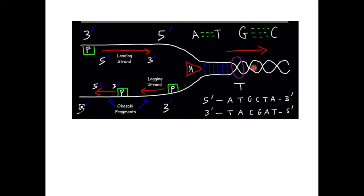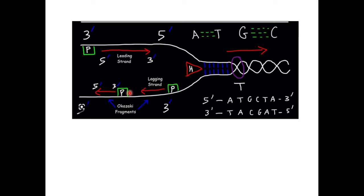Replication begins at the replication fork. Helicase enzyme cuts and separates the strands. Then the primer provides a free hydroxyl group, synthesis begins, DNA polymerase synthesizes the new strand, primers are removed by enzymes, and ligase fills the gaps. One strand is synthesized continuously from 5' to 3' (leading strand); the other strand is synthesized discontinuously (lagging strand), away from the replication fork.